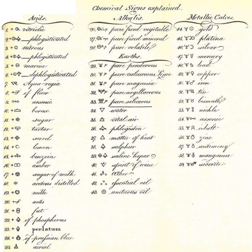Alchemical compounds include: Sal ammoniac, Aquafortis, Aqua regia, Spirit of Wine, Amalgam, Cinnabar, and Vitriol.